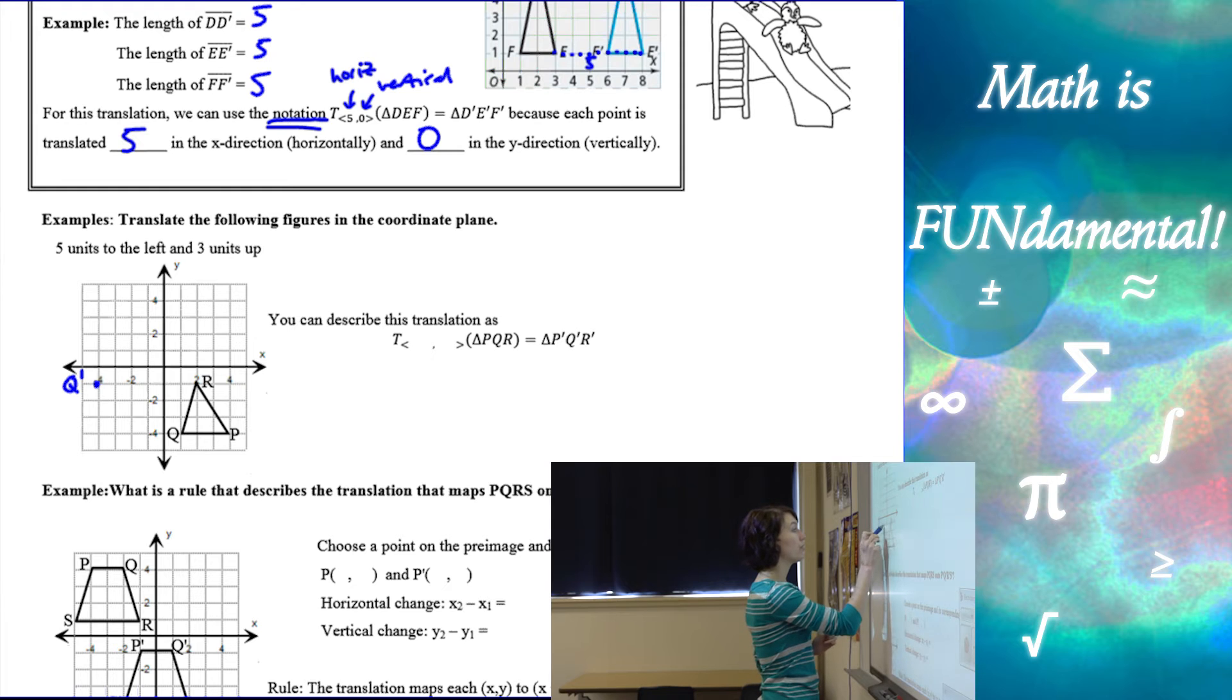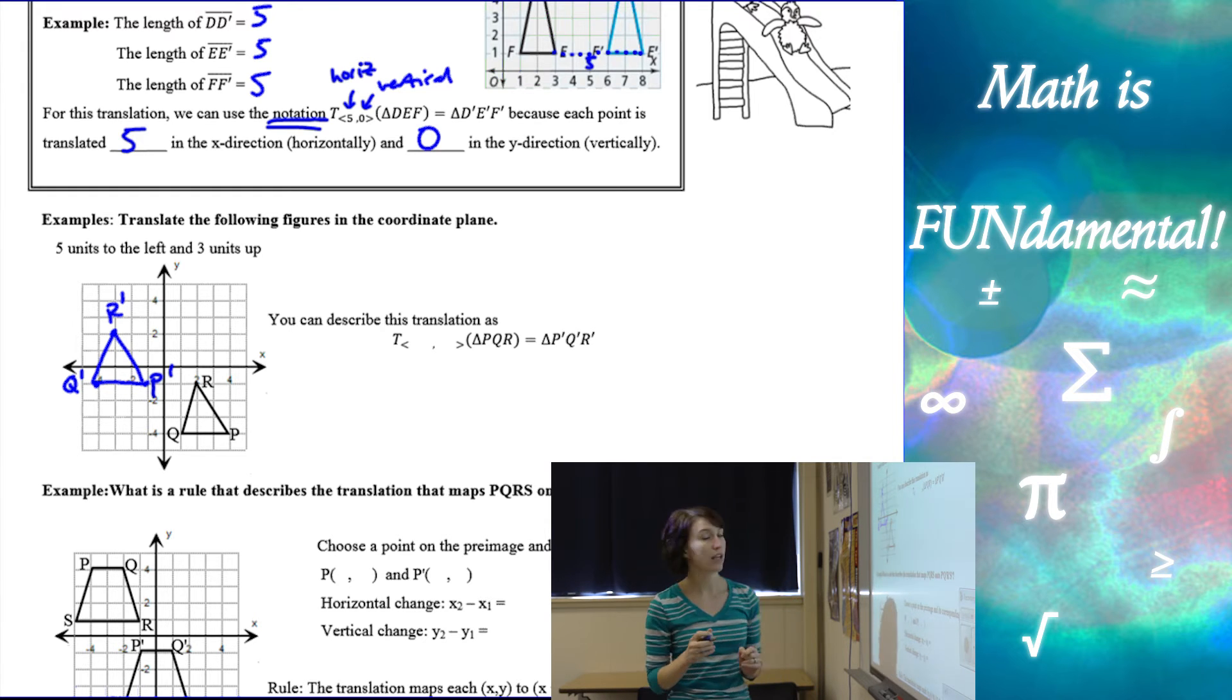R, 1, 2, 3, 4, 5. 1, 2, 3, R prime. And P, 1, 2, 3, 4, 5. 1, 2, 3, P prime. So here is my image to my pre-image.